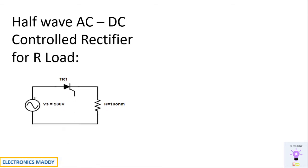This is the circuit diagram of a controlled rectifier used for an R-load. As it can be seen, since there is only one thyristor involved, it will only conduct for one half cycle. As a result, it is called a half-wave AC to DC controlled rectifier. These are the design parameters.